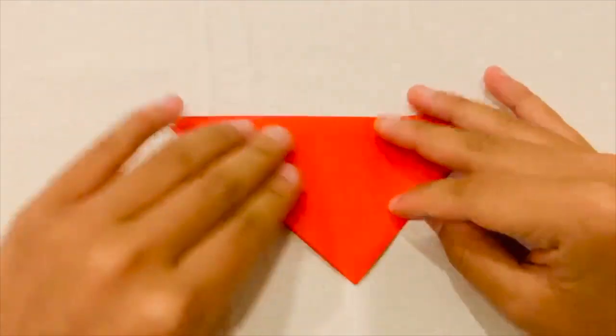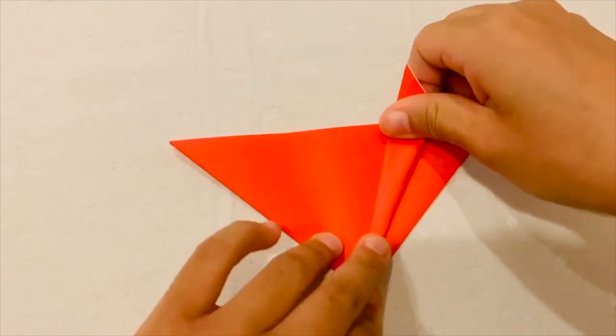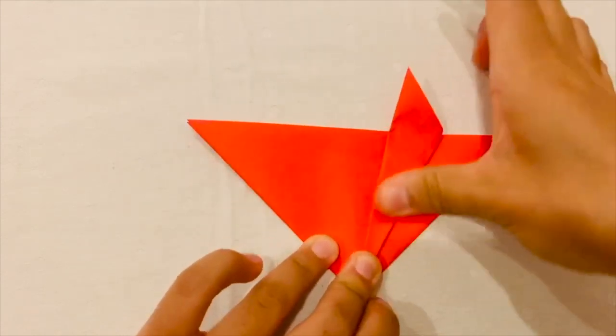Then, you're going to flip your triangle upside down, and you're going to fold one of the sides at an angle, like so. And you're going to repeat on the opposite side.